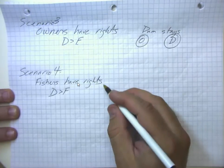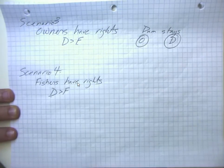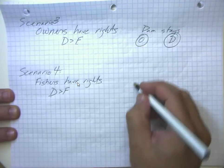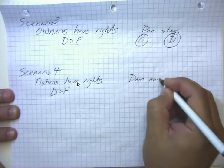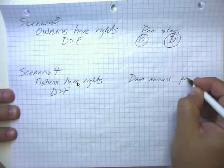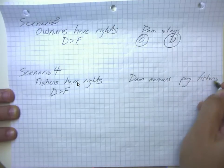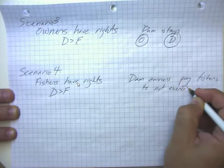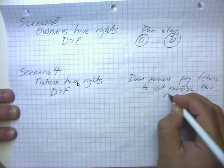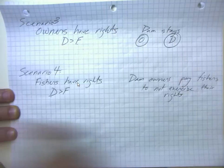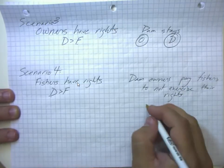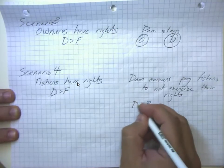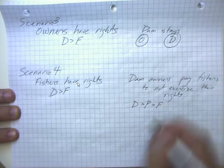If on the other hand, the fishers have rights and the dam is more profitable, keeping the dam is more profitable than tearing it down, then the dam owners pay fishers to not exercise their rights. So they have some out-of-court settlement or something like that. And the price that they're going to pay is again going to have to lie between those two numbers.